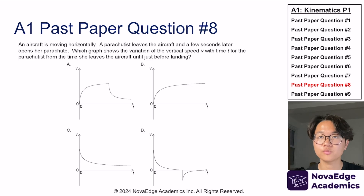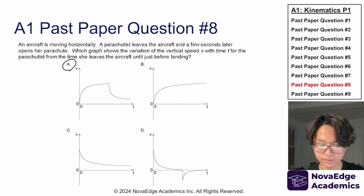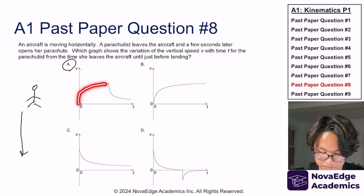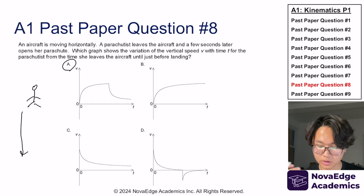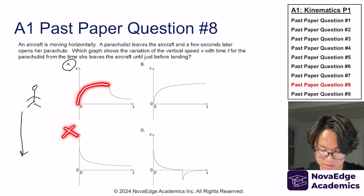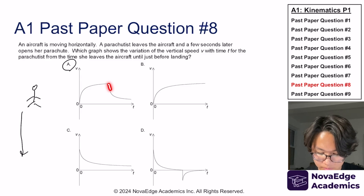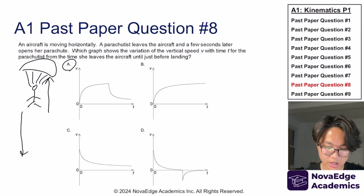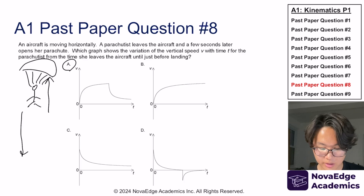Now let's try this past paper from topic A1. If you chose answer A, you are absolutely correct. The parachutist is traveling downwards and accelerating. Velocity starts at zero and increases — they're using downward velocity as positive here, so it's increasing. But what happens at time t? There's a sudden deceleration because the parachute opens up and air resistance increases dramatically. That sudden deceleration is shown in graph A.